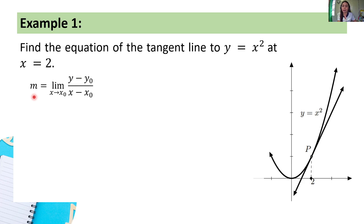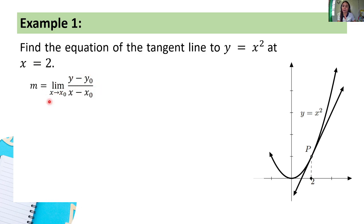Let's identify what we need to find the equation of the tangent line. First of all, that is the slope. So we're going to find the slope of the tangent line first: m equals the limit of (y minus y₀) all over (x minus x₀) as x approaches x₀.